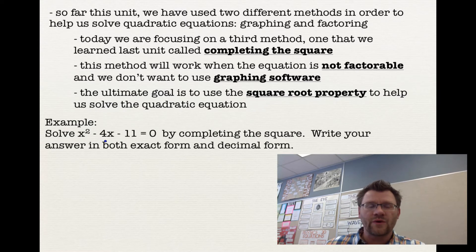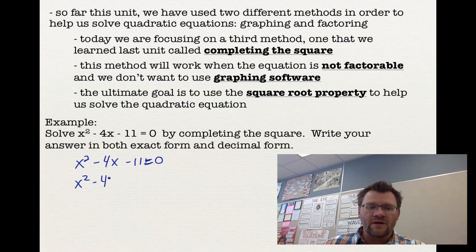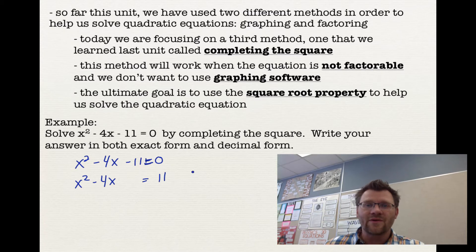Solve x squared minus 4x minus 11 equals 0 by completing the square. Write your answer in both decimal and exact form. In completing the square, we want to get a binomial squared. We'll take the first two terms and turn them into a perfect square trinomial. Because this equation is equal to 0, the first thing we do is move the 11 to the other side, where it becomes positive.